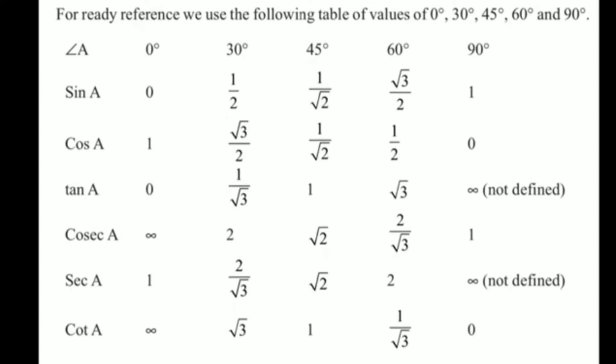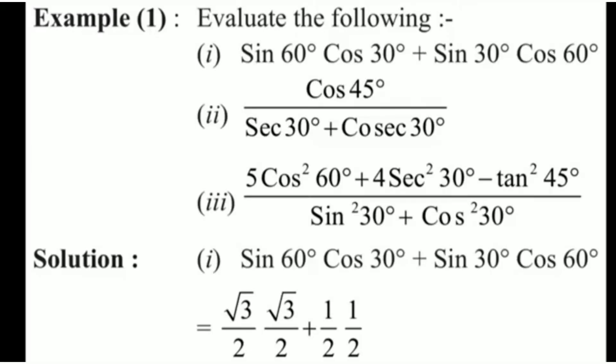Hello friends. In our previous video we calculated the T-ratios of all the acute angles — 0°, 30°, 45°, 60°, and 90° — and wrote them all in a table. Today we will learn how to solve numericals based on the values of these T-ratios. Let us start. The first example is: evaluate the following.